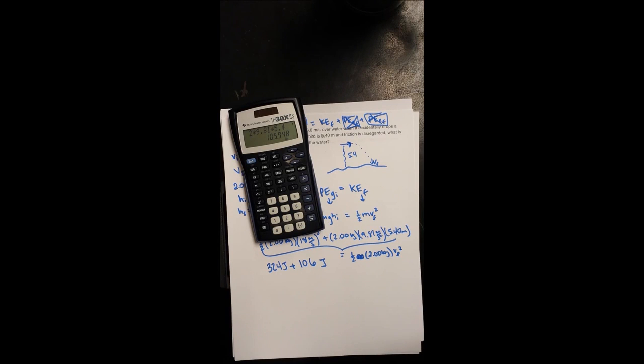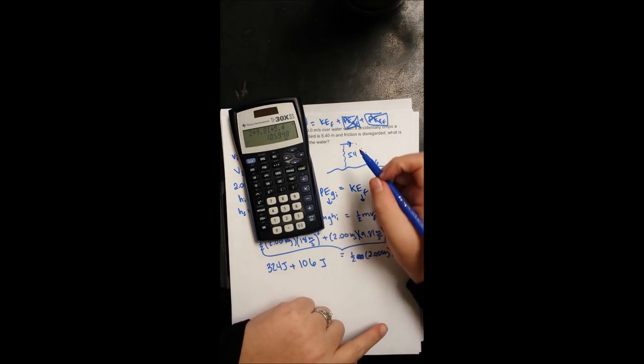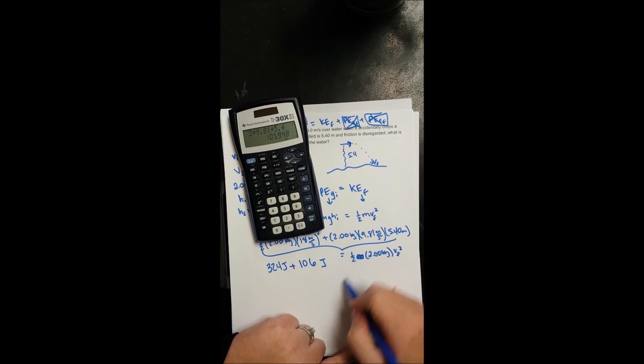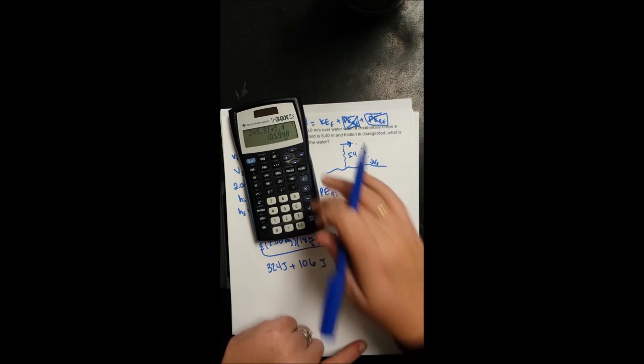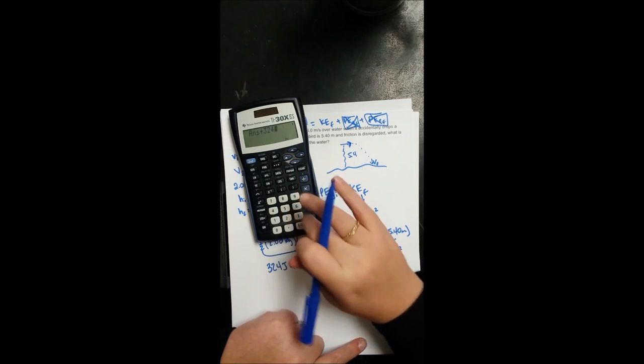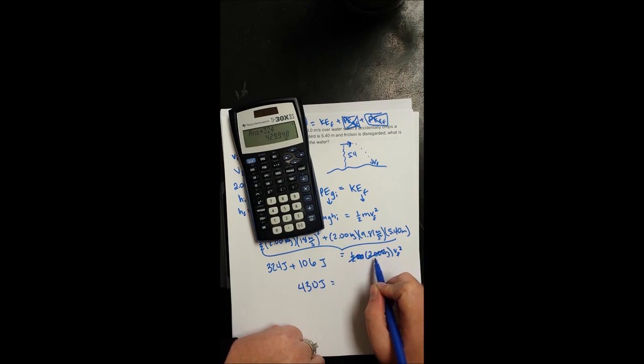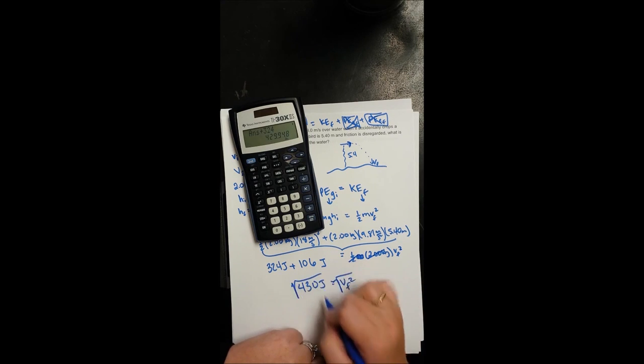Oh my gosh, my phone keeps messing up. Anyways, 324 joules plus 106 joules is going to be equal to v_f squared because half of 2 is 1. So we have a total of 430 joules initially. That's going to equal 1 times v_f squared. I'm going to take the square root of both sides.